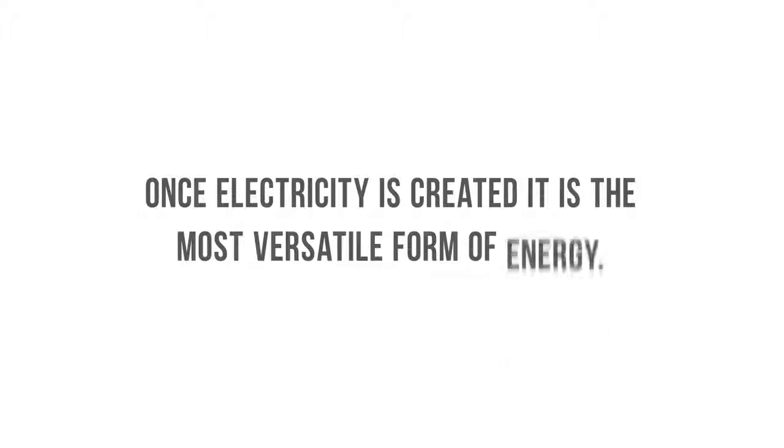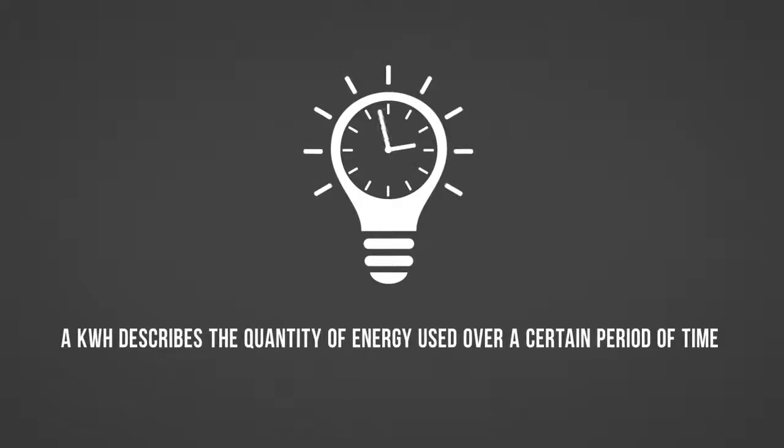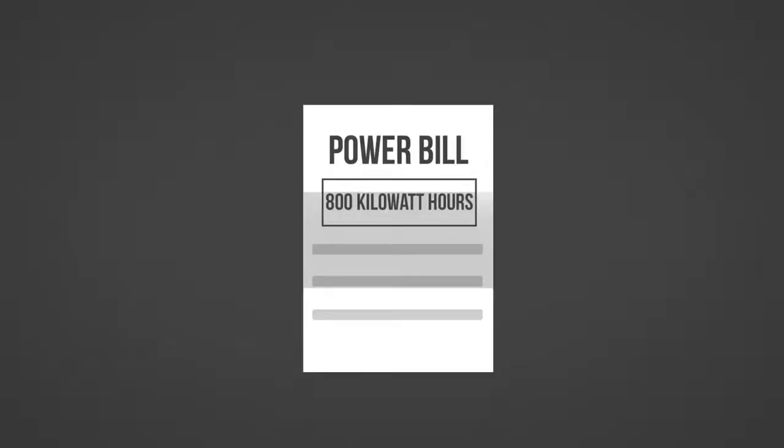Once electricity is created it is the most versatile form of energy. The rate which electricity is produced is referred to as a watt. A kilowatt hour describes the quantity of energy used over a certain period of time and is the measure you would see on your power bill.